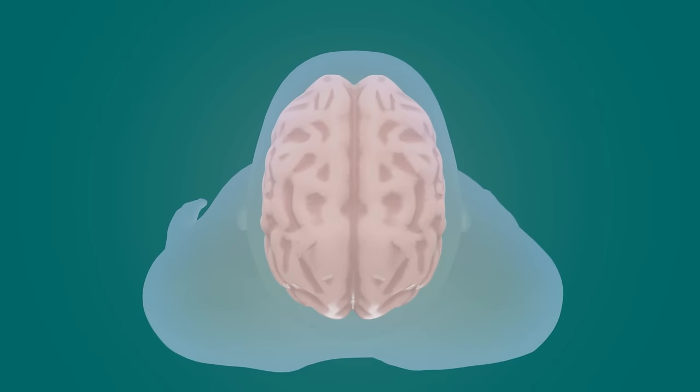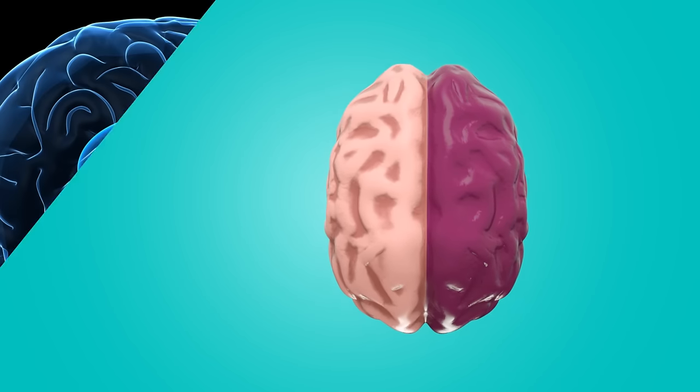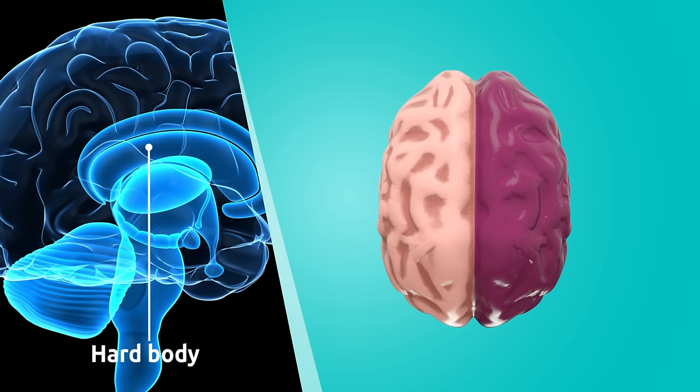The brain is divided into two major parts: the right hemisphere and the left hemisphere, which are interconnected by fibers known as corpus callosum.